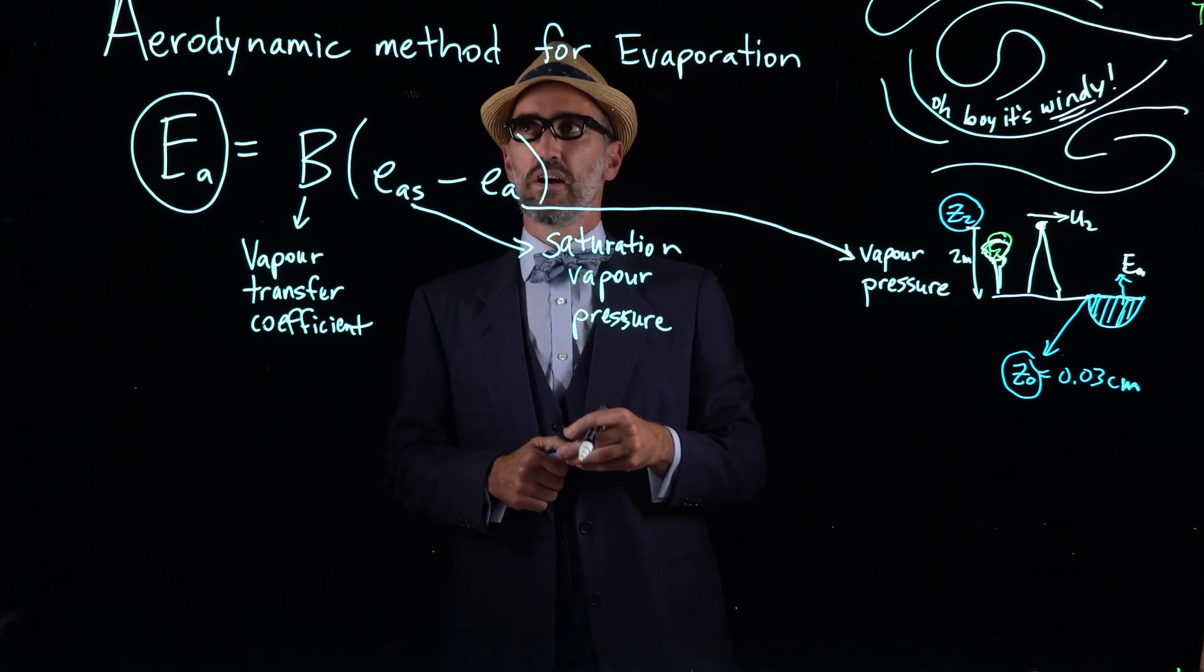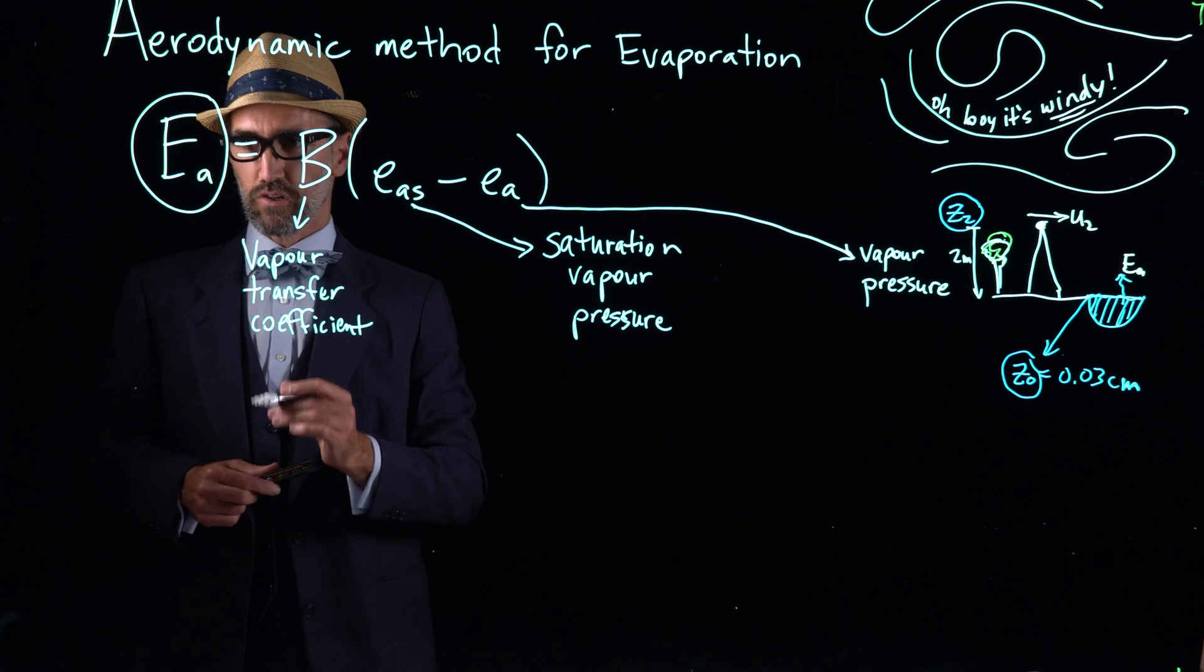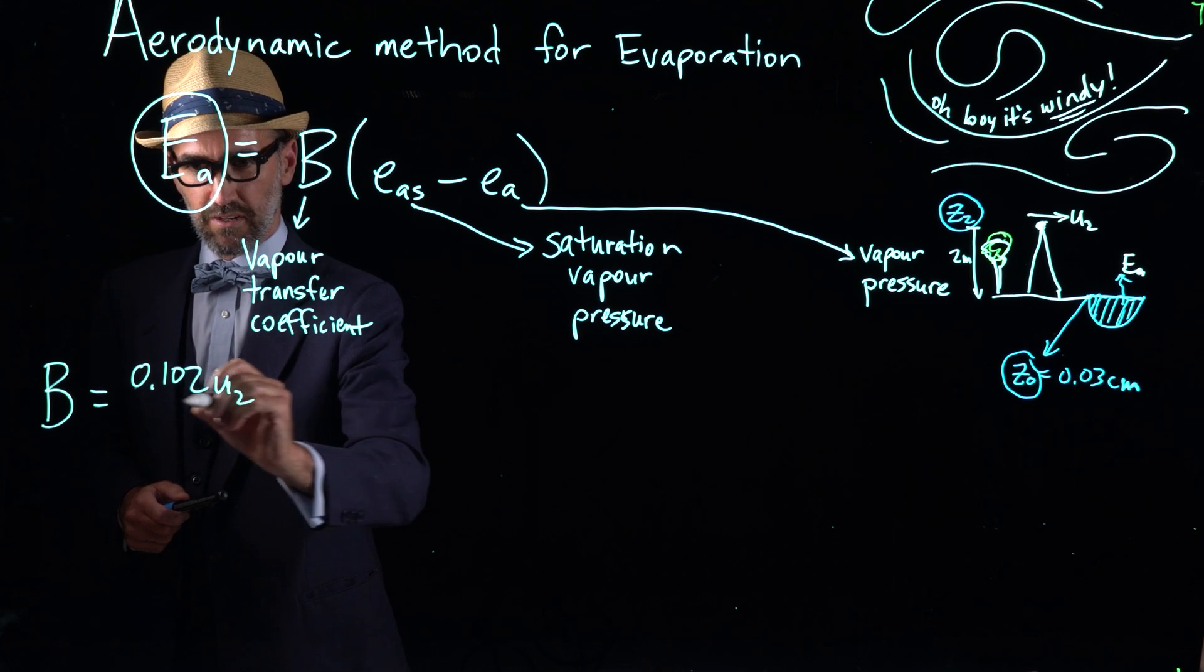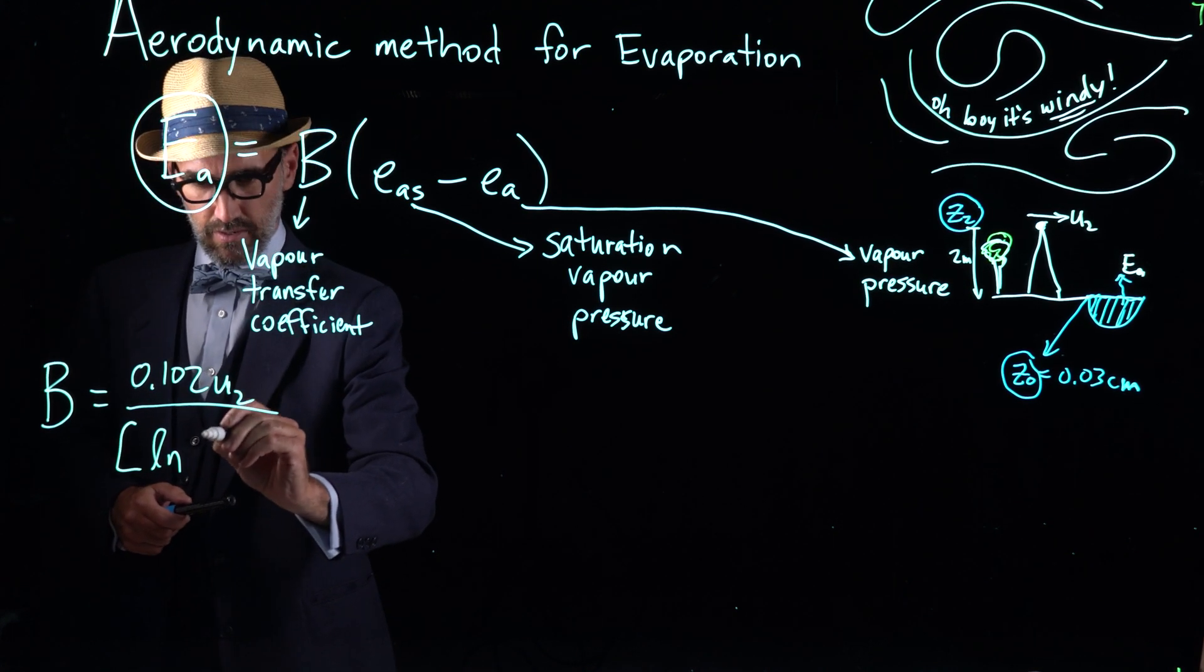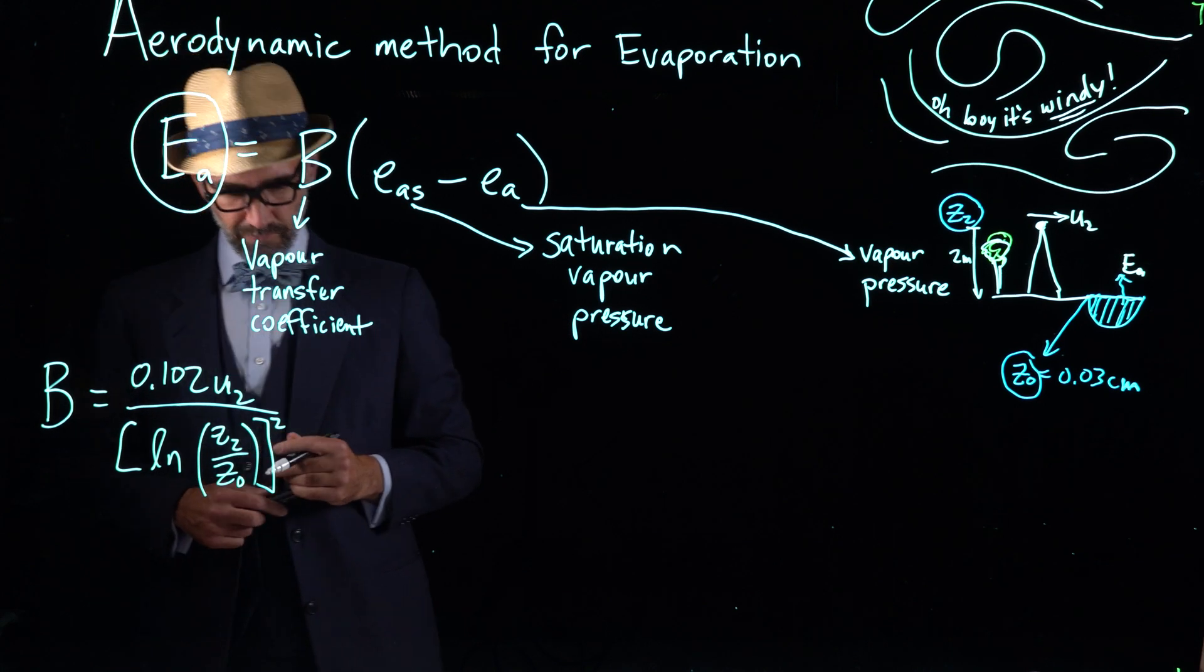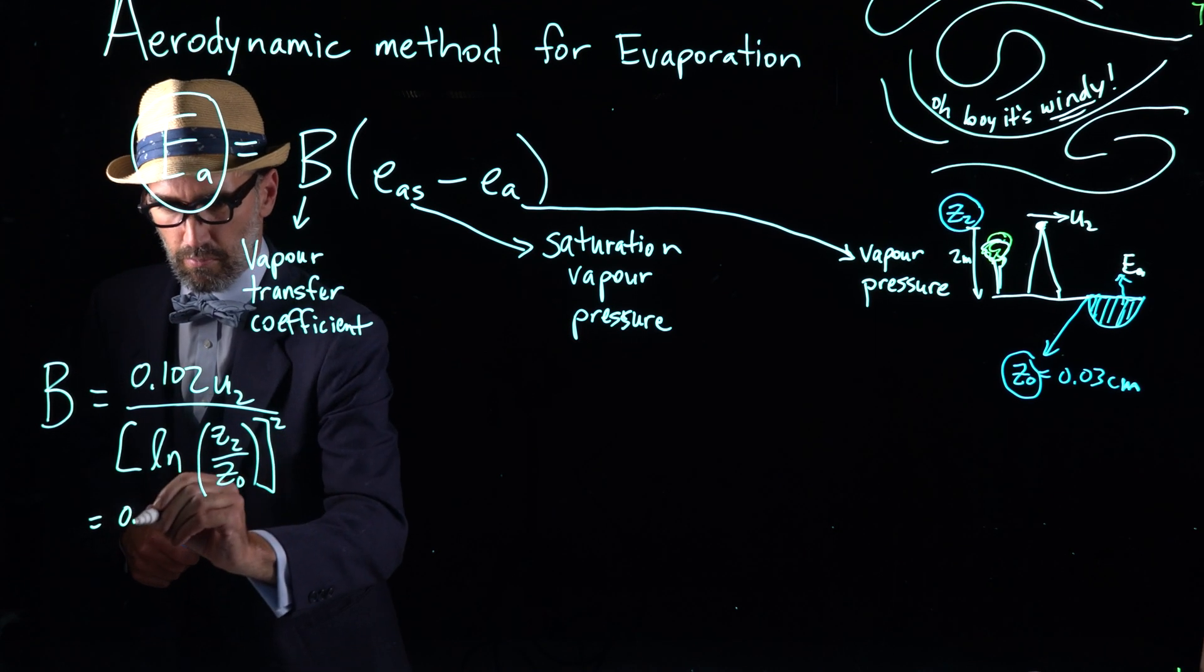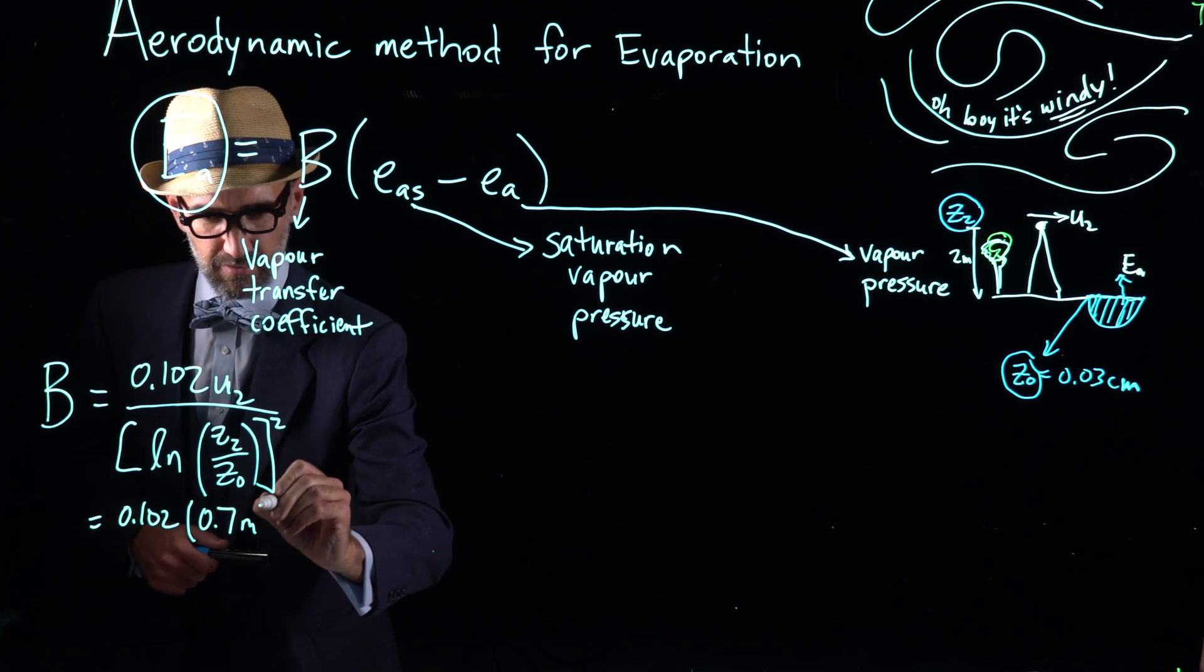So let's come back and first solve for this vapor transfer coefficient. Here we have big B, and big B is equal to 0.12 u2, this is not the band, this is the wind velocity from over there, bracket long z2 over z naught all within the brackets squared. And so we just substitute our values in from what we know about Phoenix and what we know from the drawing over there. And so those values are 0.12 times the u2 velocity of 0.7 meters per second.